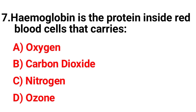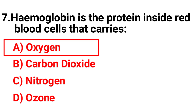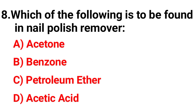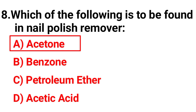Question seven: Hemoglobin is the protein inside red blood cells that carries — option A: oxygen, option B: carbon dioxide, option C: nitrogen, option D: ozone. Your correct option is option A, oxygen. Question eight: Which of the following is found in nail polish remover? The right answer is option A, acetone.